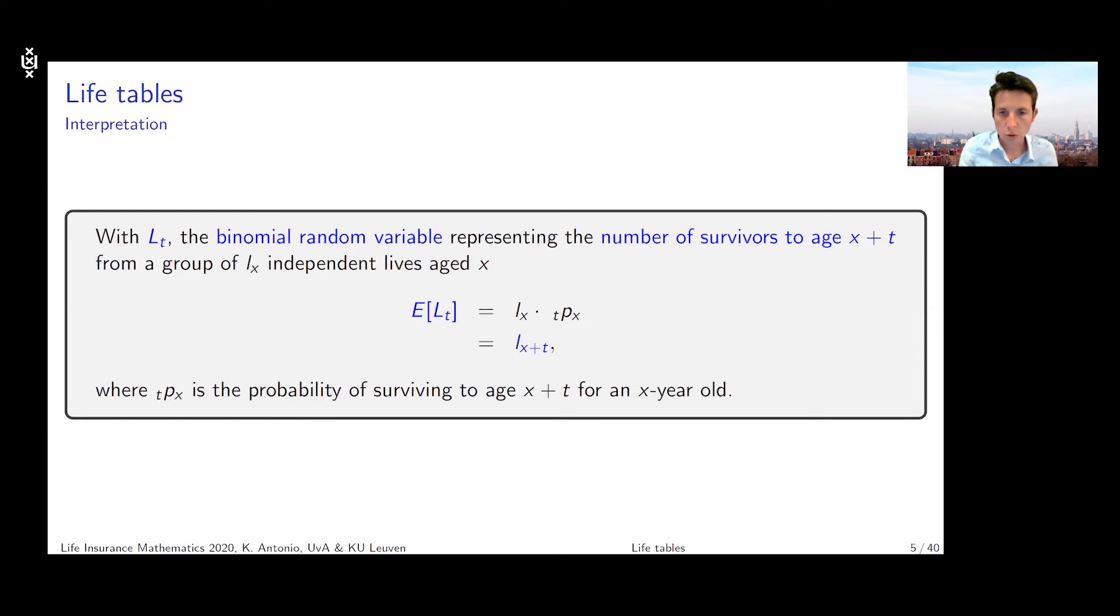That is exactly what this lx plus t entry in my life table expresses: out of an initial group of lx individuals at age x, what is the expected number of survivors until age x plus t? That shows there's a connection between the survival probabilities tpx and the lx column in my life table.